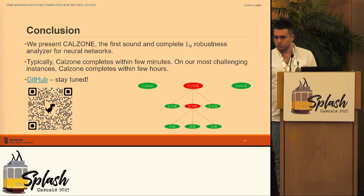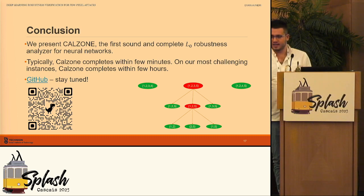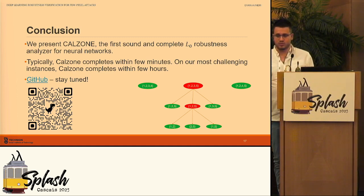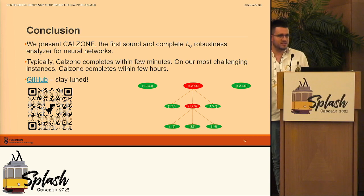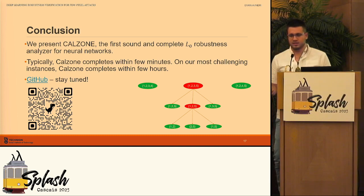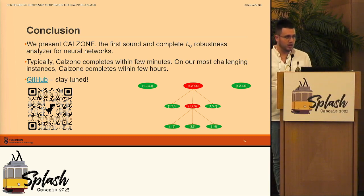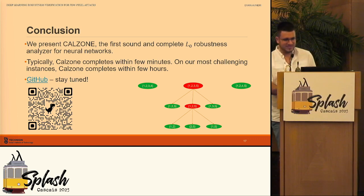To conclude, we present Calzone, the first sound and complete L0 robustness analyzer for neural networks, as far as we know. Typically, Calzone completes within a few minutes. On our most challenging instances — T equals 5 — Calzone completes within a few hours. We have a link to GitHub and will upload our code there soon, so stay tuned. Thank you.